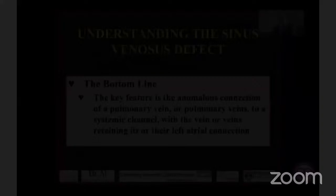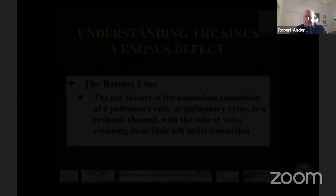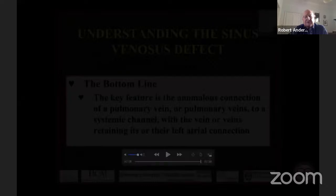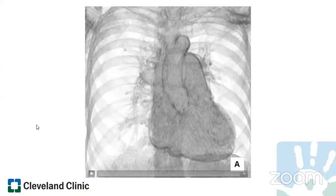There is a technical issue: Justin sent the wrong video for the CT of the sinus venosus defect, but he will now narrate it live. This is an example of a superior type sinus venosus defect shown in a CT data set — a fluoroscopic-like image of the cardiac silhouette. The superior caval vein is colored white, the anomalous right upper pulmonary veins in green, the right side of the heart in purple including the right atrium, right ventricle, pulmonary trunk and branch pulmonary arteries, and the left heart including the thoracic aorta in red.